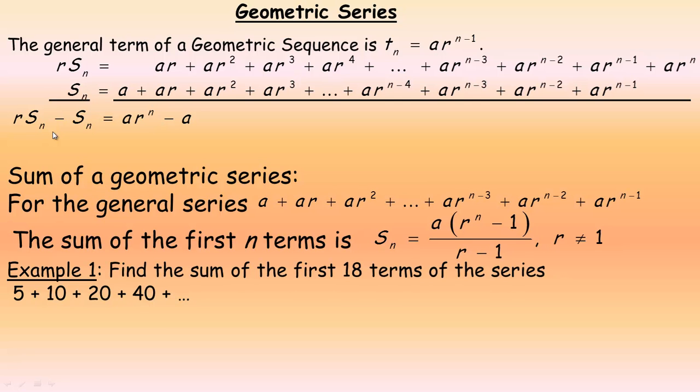So, now we're trying to find a formula for s sub n. So what I'm going to do next is I'm going to factor an s sub n out on the left. So I would have s sub n times r minus 1. Remember when you factor an s sub n out of a negative s sub n, there would just be a negative 1 at the end. And I'll factor an a out on the right. So it would be a times r to the n minus 1. So in order to solve for s sub n, the sum of n terms, I would divide both sides by r minus 1.